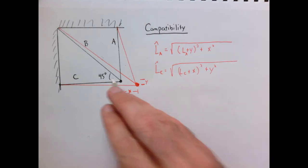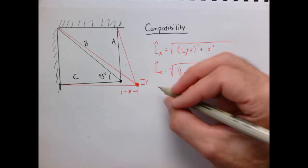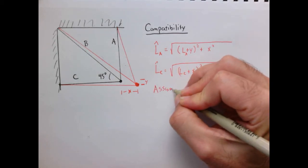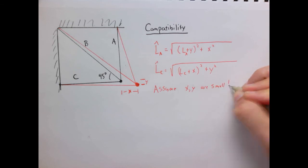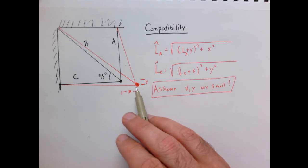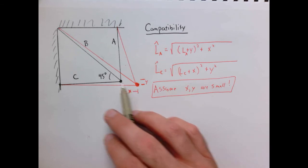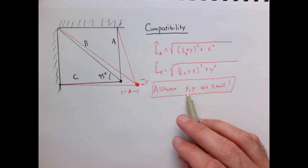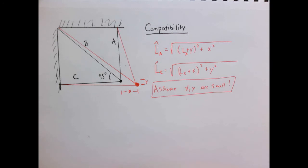If X and Y are small, we can linearize these equations using a Taylor series. For spring A, expanding L̃_A = √(L_A² + 2·Y·L_A + Y² + X²), and since X and Y are small, the quadratic terms Y² and X² are negligible. After dropping those terms and applying the Taylor series approximation for the square root, we can linearize: L̃_A ≈ L_A · (1 + Y/L_A) = L_A + Y.